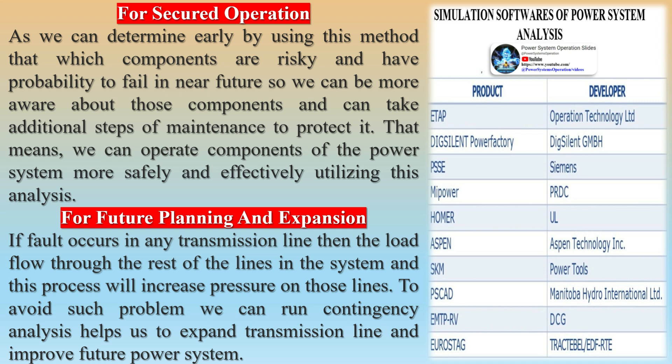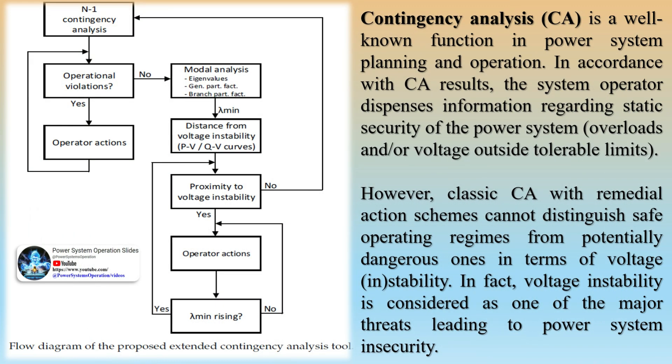Contingency creation consists of every possible scenario that might occur in a power system and involves making contingency lists. Contingency selection is the second stage — the process of determining severe contingencies from anything that might lead to a violation of bus voltages and power. The least severe contingencies are rejected, and the most severe disruptions are considered. The performance index is utilized in this procedure to identify the worst ones.